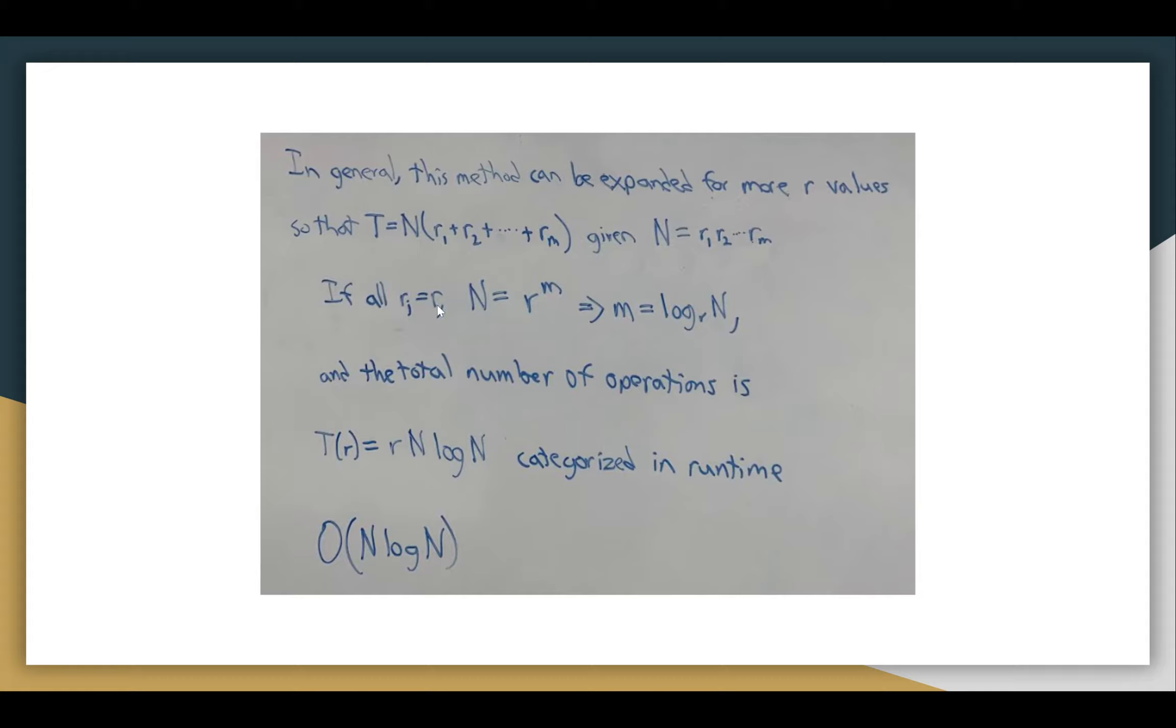If we make all of those different R values equal to each other, one constant value but commonly 2, n just equals that R value to the power of m. Because it's multiplying R times R times R. If we take a logarithm on both sides, we can see that m equals log base R of n. And the total number of operations is R times n log of n. It's categorized in the runtime O of n log n as constant factors aren't considered in big O notation for runtimes.